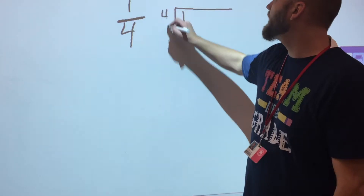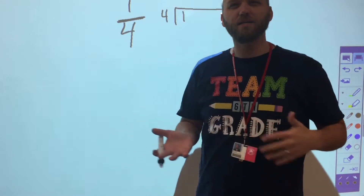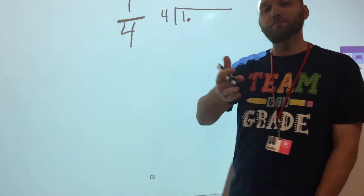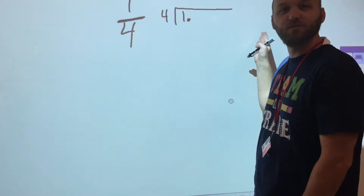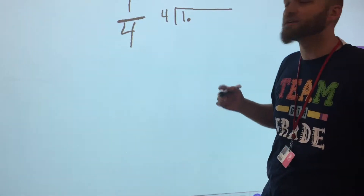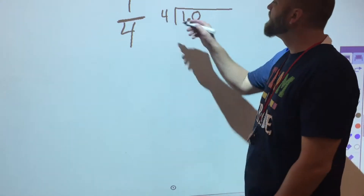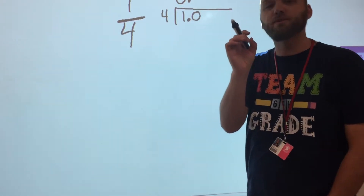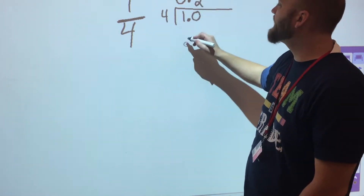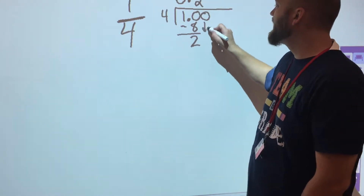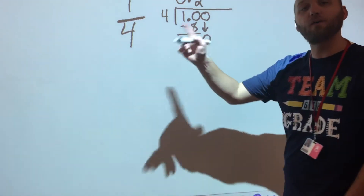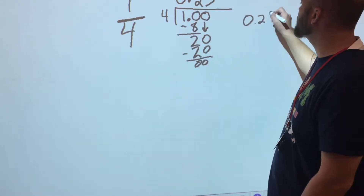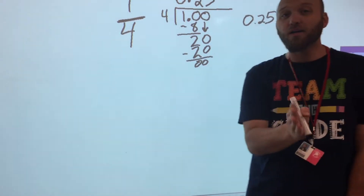When we turn 1/4 into a division problem, a lot of you said you can't take four out of one — but I can, I'm just going to get a really small number. I put a decimal in, and I can add zeros after the decimal without changing the value of one. Four goes zero times into one, so I put that zero and move the decimal up. Four into ten goes two times, giving me eight with a remainder of two. Then four into twenty goes five times, so one-fourth equals 0.25, or twenty-five hundredths.